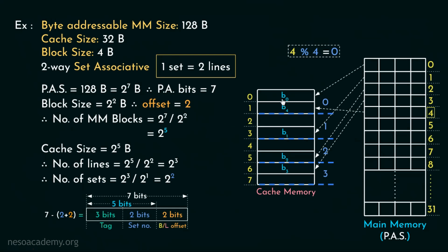To find block number 0 or block number 4, we need not search the entire cache — we only need to search inside set number 0, requiring just two comparators of 3 bits each. This is why set associative mapping is so popular: it combines both the advantages of direct memory mapping and associative memory mapping. In the following sessions, we will observe various numerical example problems and previous year questions on this memory mapping technique.